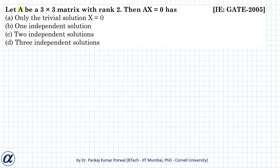In this question we are given a matrix A of size 3 by 3 with rank 2, and we want to find out what is true about the homogeneous system of equations Ax equals 0.